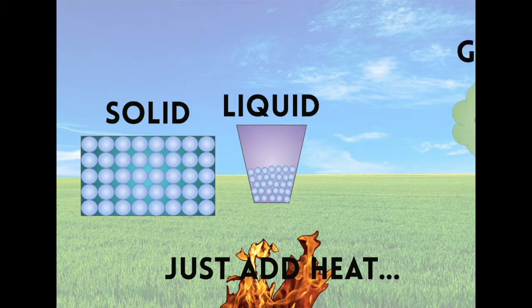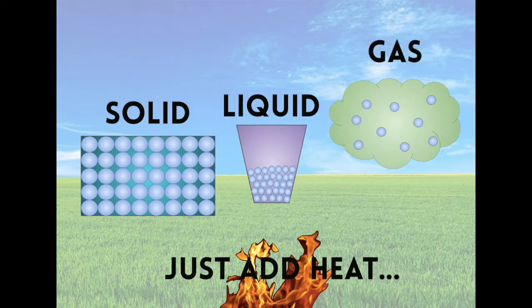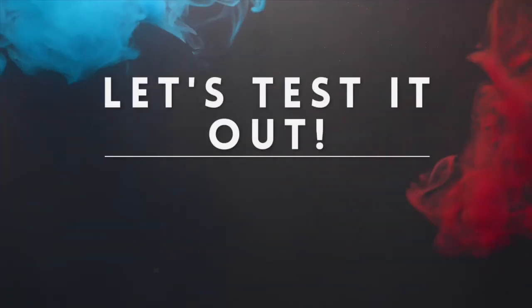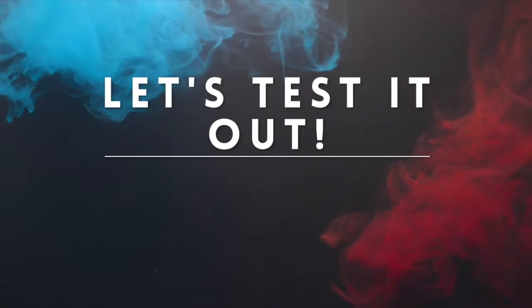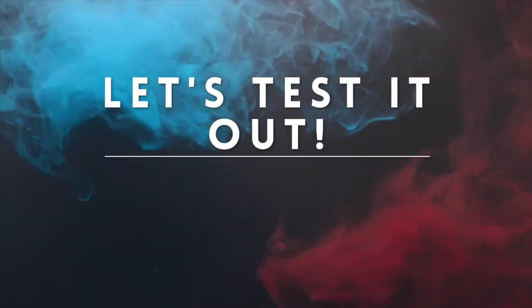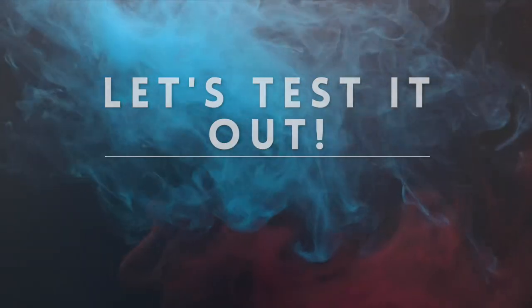An example of all three states with one element would be water. When water is solid, like ice, it is structured and does not flow. When you add heat, it melts and becomes liquid water. When you heat it even further, it becomes steam — a gas. Now that we know the science, let's go ahead and test it out with some hands-on experiments.